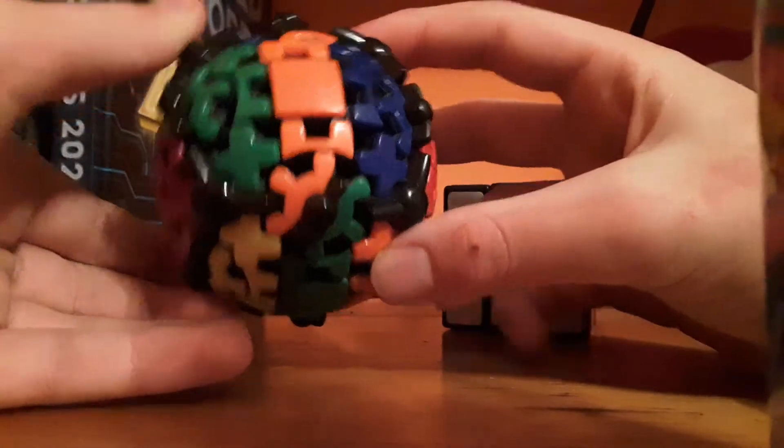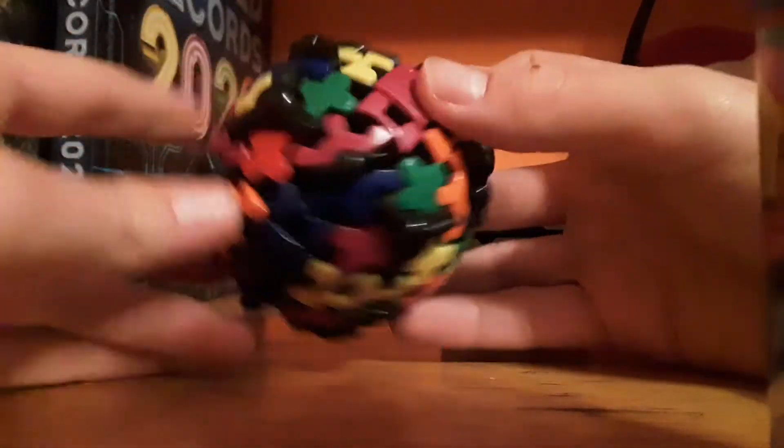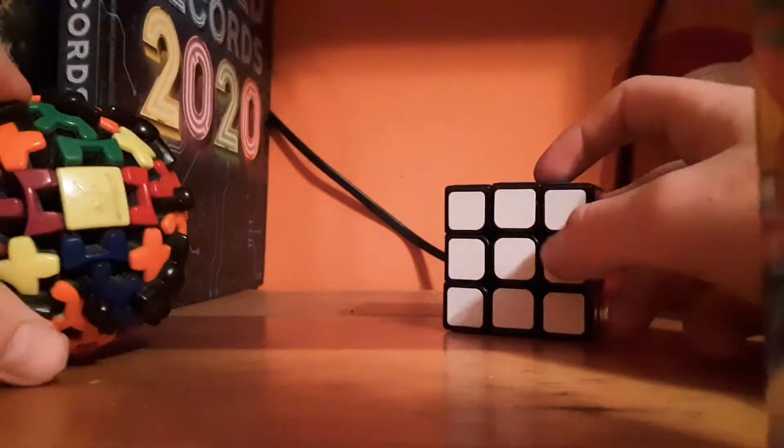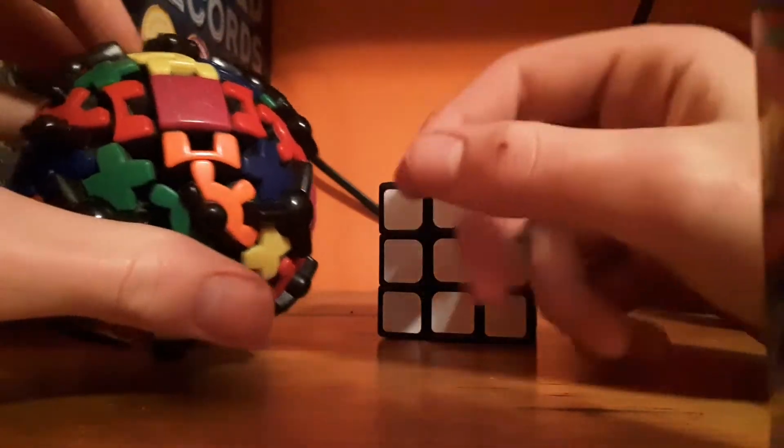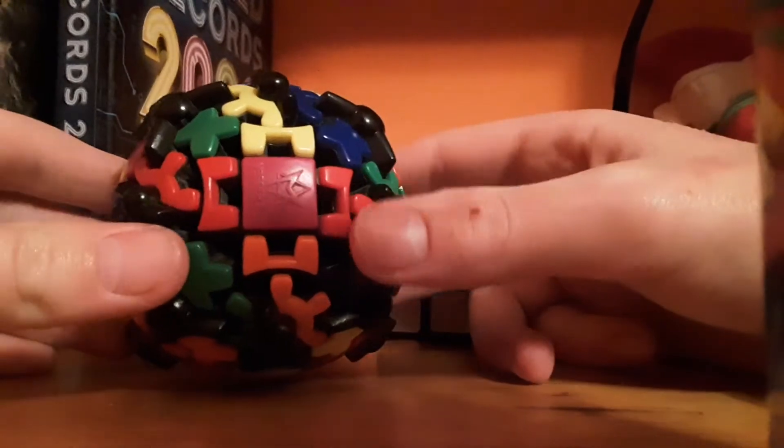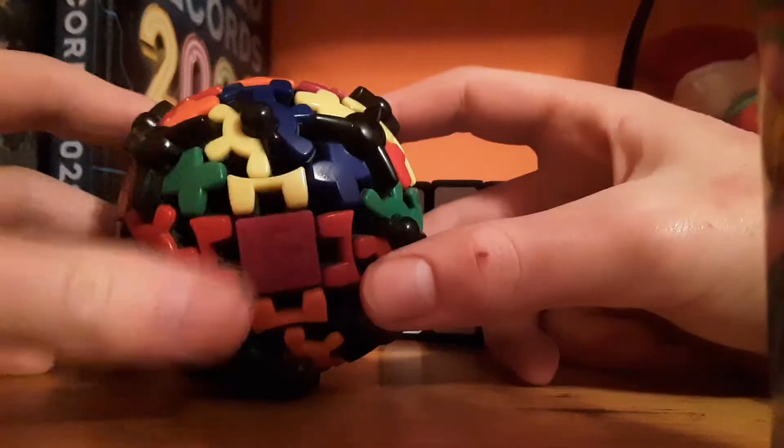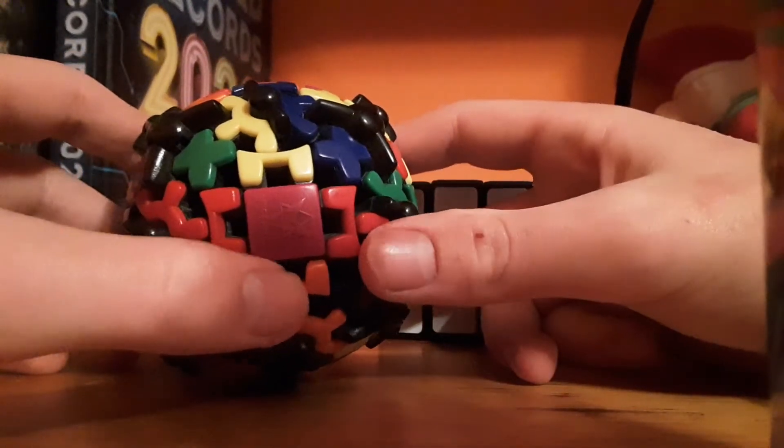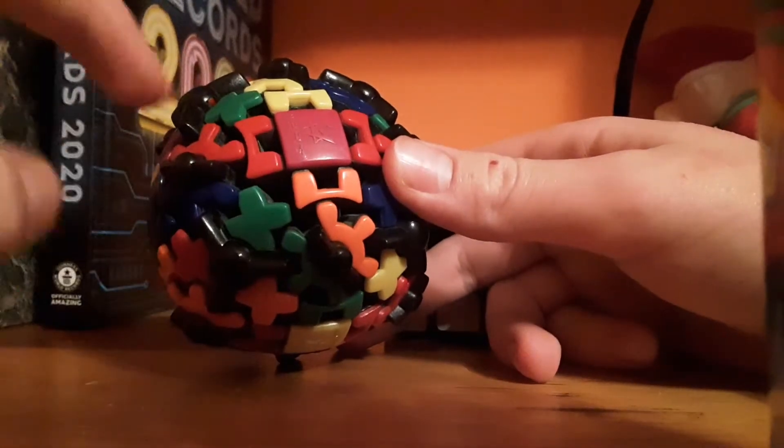So I'm just going to scramble it and sort of just go through how it works. Another thing, as you can see here, they're always going to be opposites. Like, this cube is very easy to solve because it's all opposites. You have orange and yellow on the same side. You're always going to have some sort of opposites on the same side at all times.